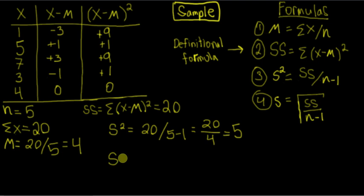And finally, to calculate our sample standard deviation, we can just square root five. And we will get approximately 2.2.